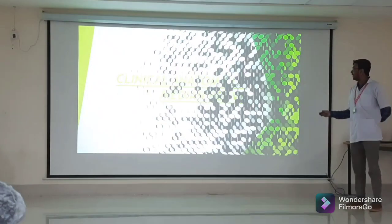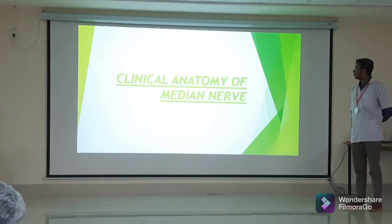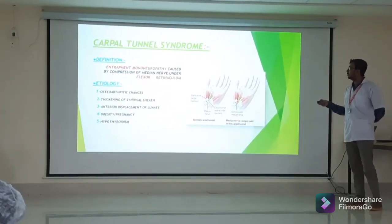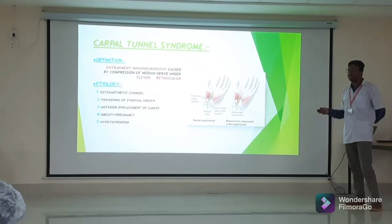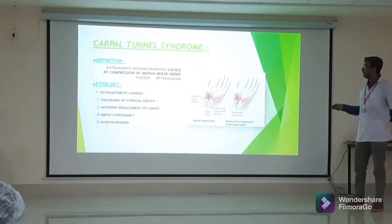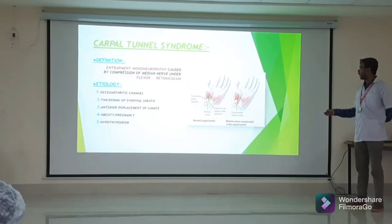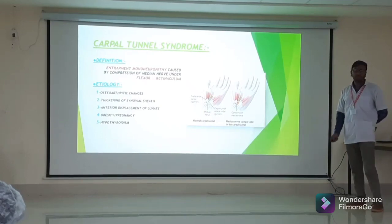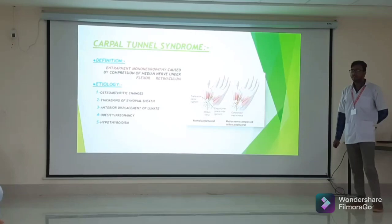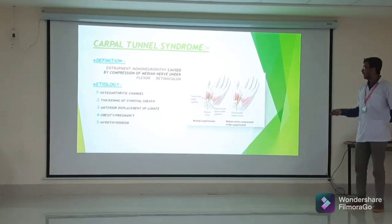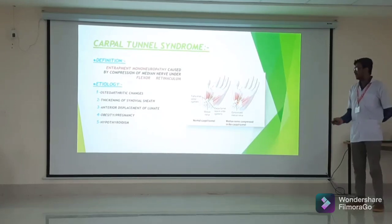In clinical anatomy, a major syndrome is Carpal Tunnel Syndrome — an entrapment mononeuropathy caused by compression of the median nerve under the flexor retinaculum. The aetiologies include osteoarthritic changes, hypothyroidism, lunate bone displacement anteriorly, obesity, and pregnancy.